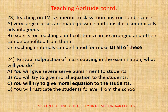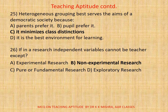Question 24: To stop the malpractice of mass copying in the examination, what will you do? Correct answer: c) you will try to give moral education to the students. Question 25: Heterogeneous grouping best serves the aims of a democratic society because — correct answer: c) it minimizes class distinctions. Question 26: If in a research, independent variables cannot be manipulated, it is called non-experimental research. Correct answer: b.